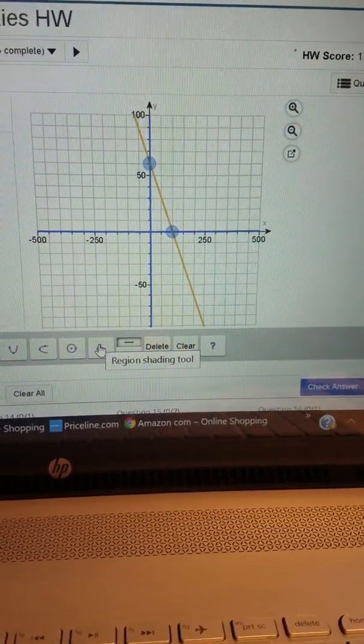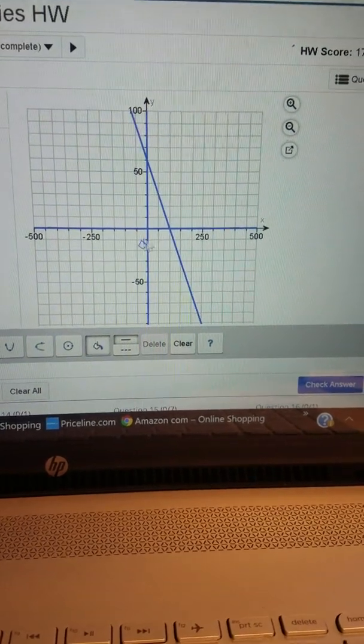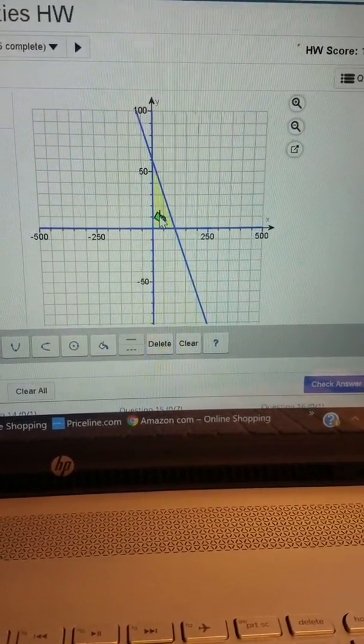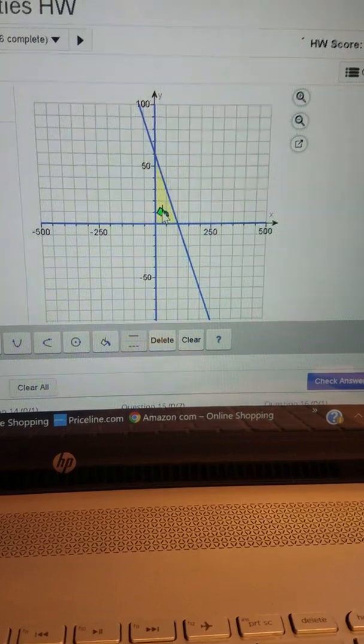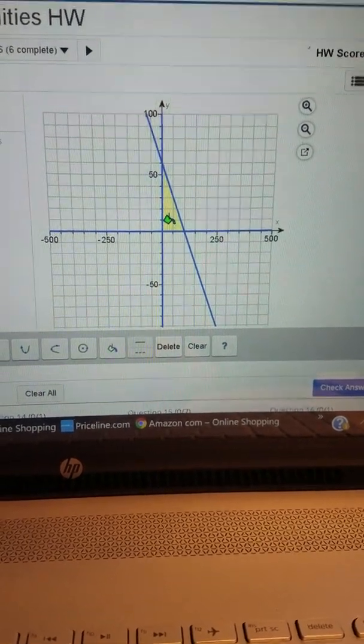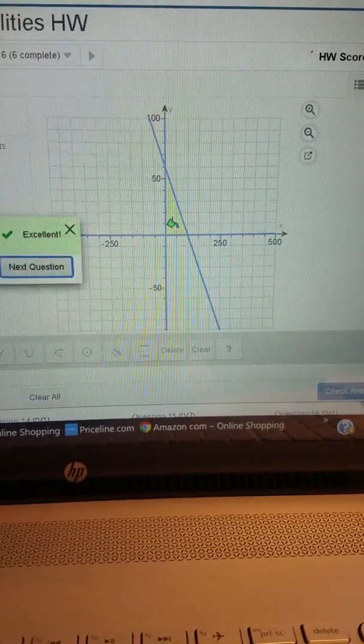So I'm going to click the region shading tool or the paint bucket and I'm going to click in the area that I want shaded. That's where all the shading overlaps and that's it.